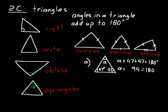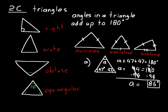We need to find what plus 94 gives us 180. We subtract 94 from both sides. 94 minus 94 is zero, so A equals 180 minus 94. Borrowing as needed: 10 minus 4 is 6, and 17 minus 9 is 8. So A equals 86 degrees.